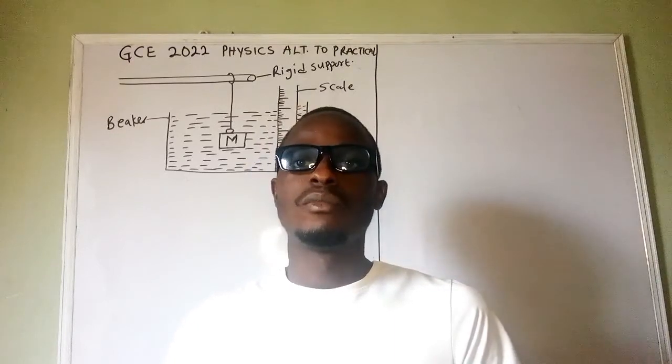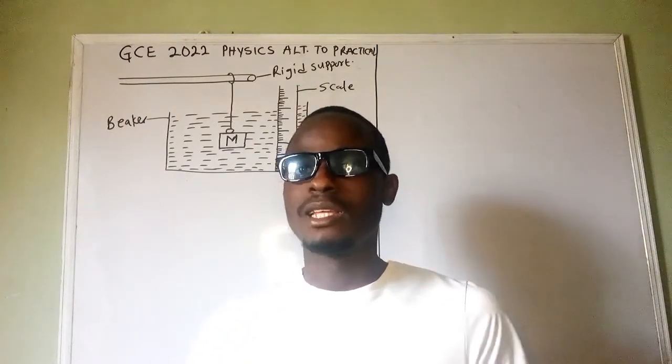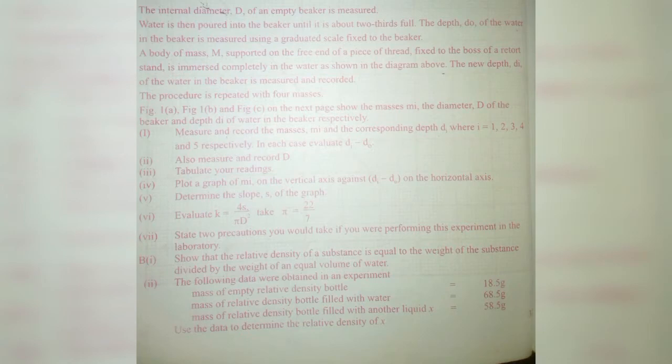This is a diagram we're going to use on the mechanics. The procedure and everything else will be shown in the next slide. Let's look at the procedure of the experiment. The internal diameter d of an empty beaker is measured. Water is then poured into the beaker until it is about two-thirds full. The depth d₀ of the water in the beaker is measured using a graduated scale fixed into the beaker.